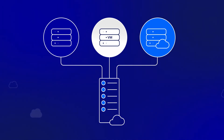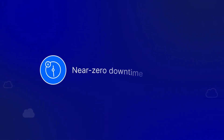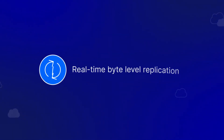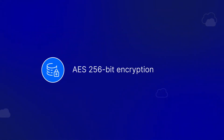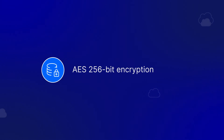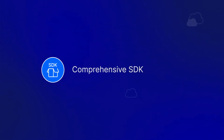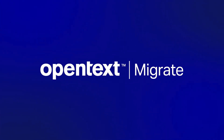Learn how OpenText Migrate enables quick and easy migration of your physical, virtual, and cloud workloads with: structured, repeatable workload migrations and near-zero downtime; highly automated and secure migration configuration and management; real-time, byte-level replication to simplify challenging workloads; point-to-point migrations with AES 256-bit encryption requiring no additional infrastructure; and a comprehensive SDK for integration, automation, and orchestration.